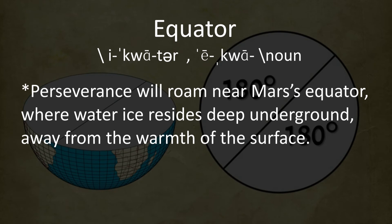Perseverance will roam near Mars' equator, where water ice resides deep underground, away from the warmth of the surface.